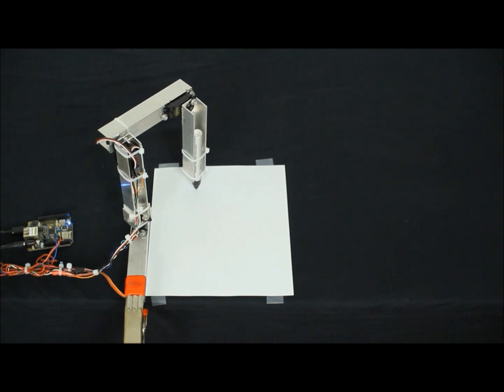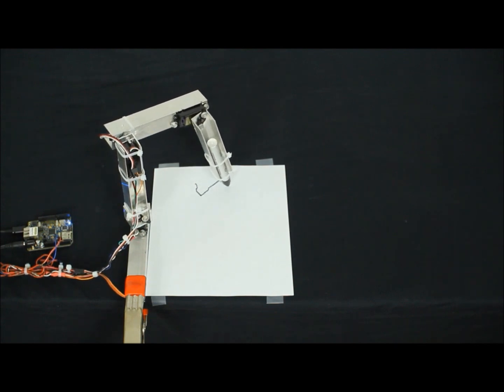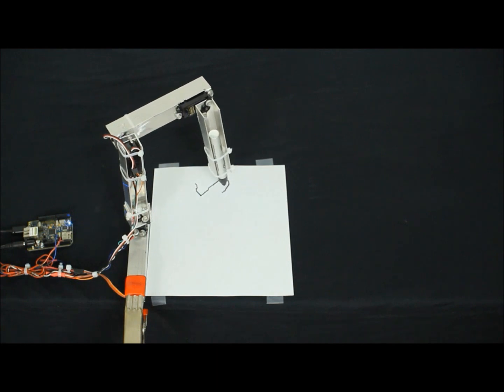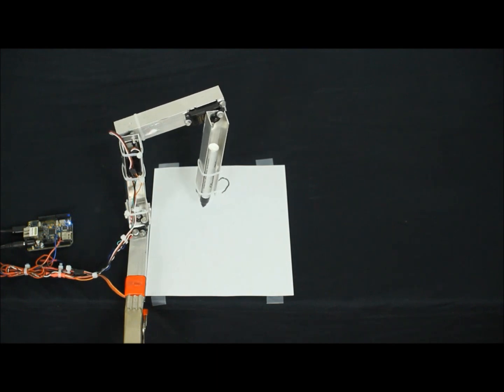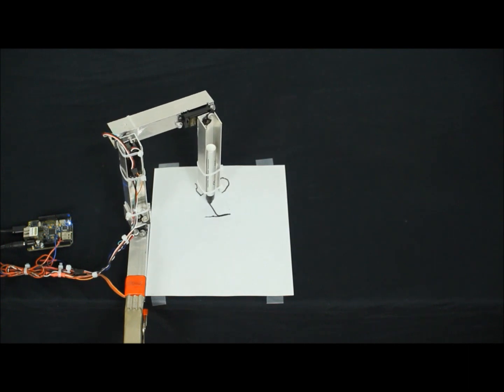The arm is actually able to write different things based on code from the computer. This code is generated from X, Y and Z coordinates. These coordinates are then converted into angles that the servo motors can turn to, thus generating the draw path of the text.